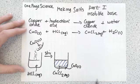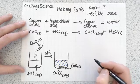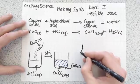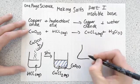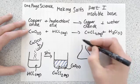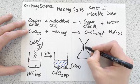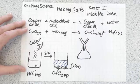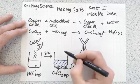We want a nice pure sample of our copper chloride, so the next thing we've got to do is filter this mixture. To do that, you want to get yourself a conical flask, funnel, and a filter paper, and you take this mixture and you pour it in.